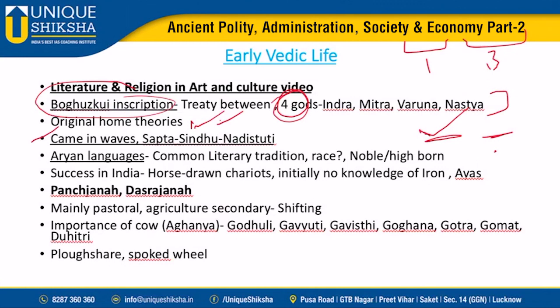Aryans came in waves to India; the earliest wave came around 1600-1500 BC, which was synonymous with the decline of the Indus Valley Civilization. As mentioned in Part 1 of this ancient Indian revision series, the Aryan Invasion Theory was discussed there - the coming of the Aryans and the Indus Valley Civilization's decline are quite contemporary events.